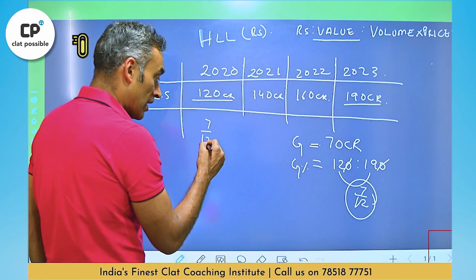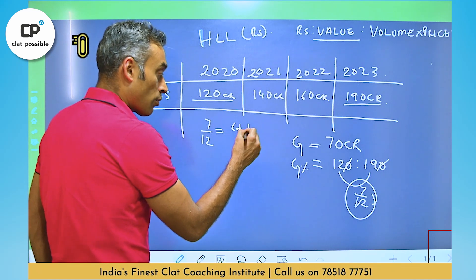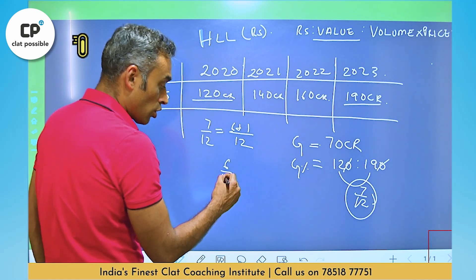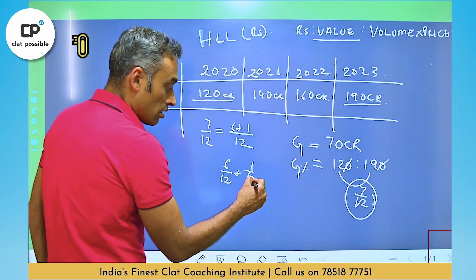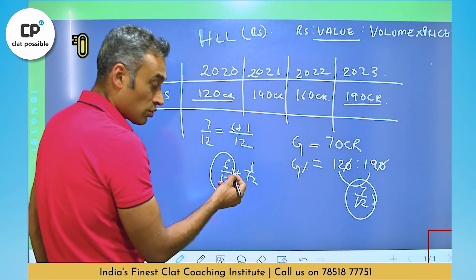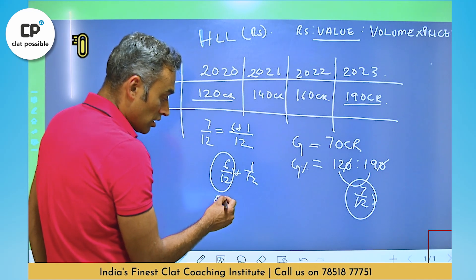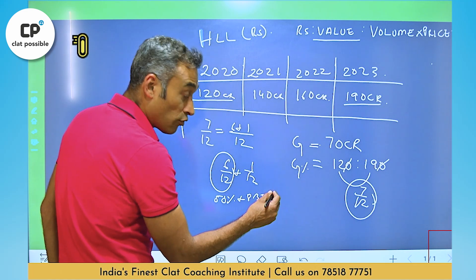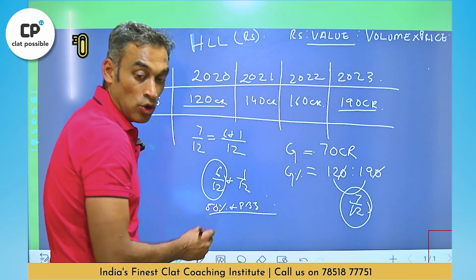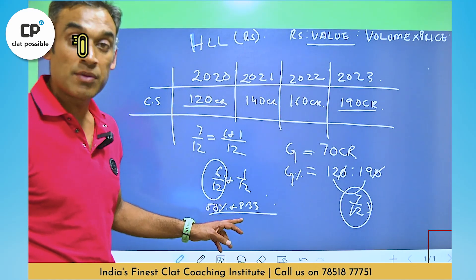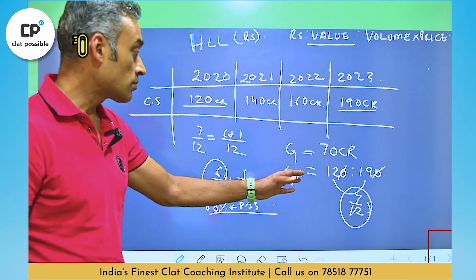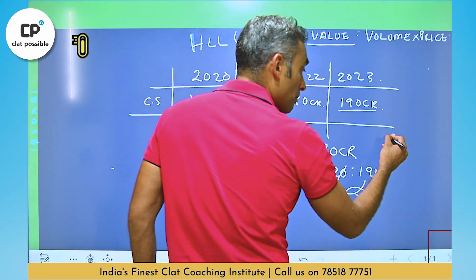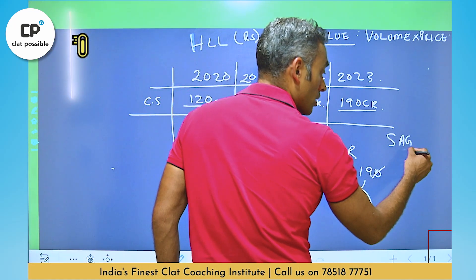7 upon 12 — we can break this as 6 plus 1 upon 12, which is 6/12 plus 1/12. 6 by 12 is half, so that's 50%, and 1 by 12 is 8.33%. So the overall answer is 58.33% growth. You need to be comfortable with ratios to use this shortcut quickly.